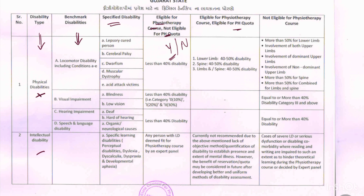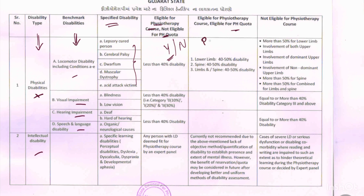Starting with physical disabilities — benchmark disabilities include locomotory disabilities, visually impairment, hearing impairment, speech and language disabilities, leprosy cured persons, cerebral palsy, dwarfism, muscular dystrophy, and acid attack victims. Persons with less than 40% disability are eligible for the course. Persons with lower limb disability of 40–50%, spine disability of 40–50%, or combined limb and spine disability of 40–50% are eligible for the physiotherapy course as well as the physically handicapped quota.